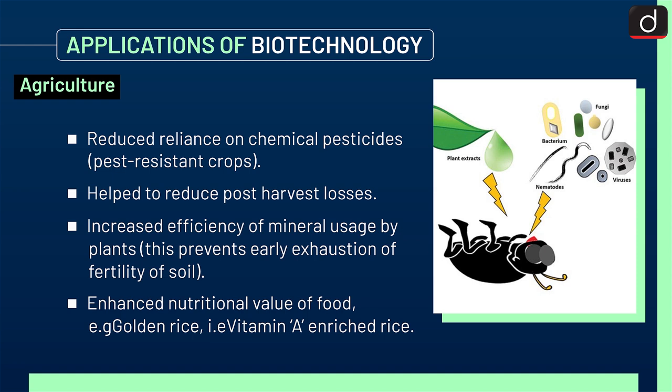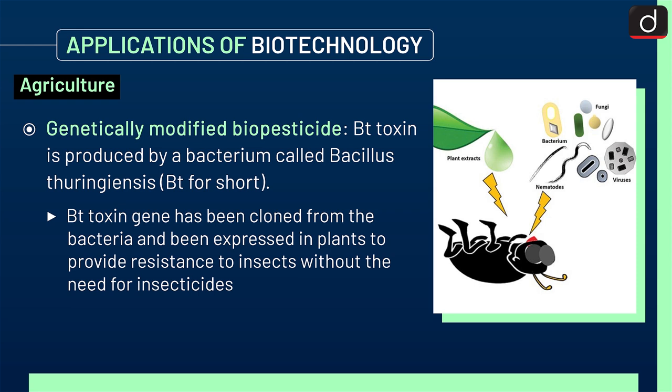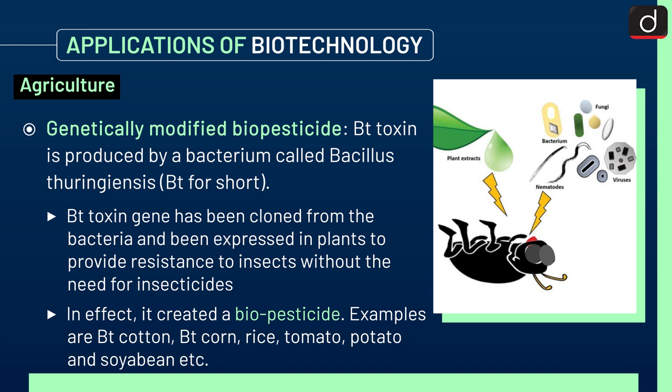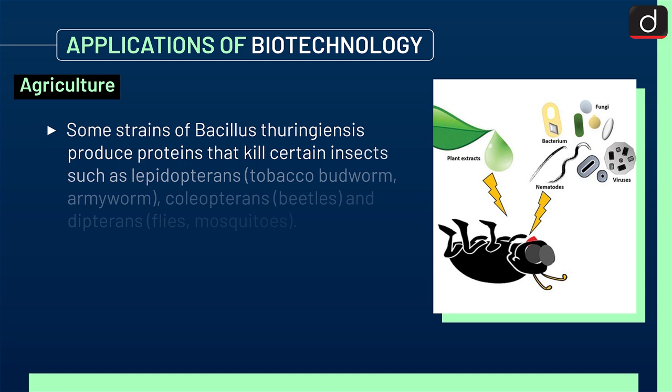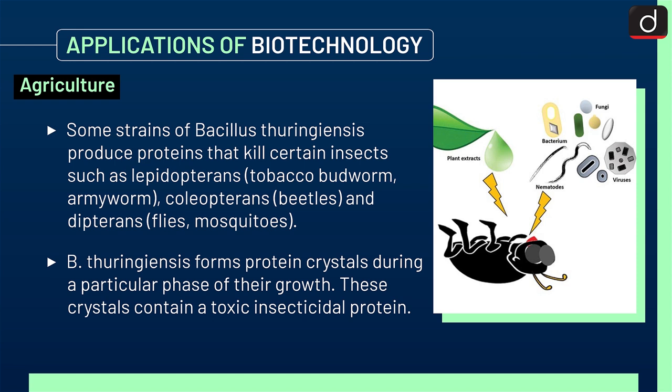Next is genetically modified biopesticide. Bt toxin is produced by a bacterium called Bacillus thuringiensis, i.e. Bt for short. The Bt toxin gene has been cloned from the bacteria and expressed in plants to provide resistance to insects without the need for insecticides — in effect, creating a biopesticide. Examples are Bt cotton, Bt corn, rice, tomato, potato, and soybean. Some strains of Bacillus thuringiensis produce proteins that kill certain insects such as Lepidopterans, Coleopterans (beetles), and Dipterans (flies and mosquitoes). Bt thuringiensis forms protein crystals during a particular phase of their growth. These crystals contain a toxic insecticidal protein.